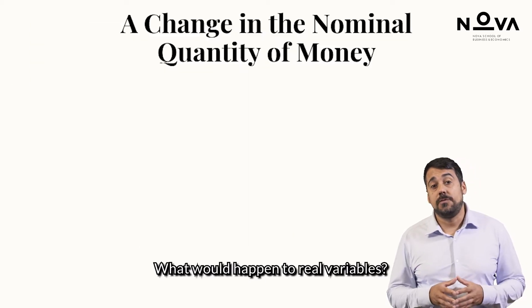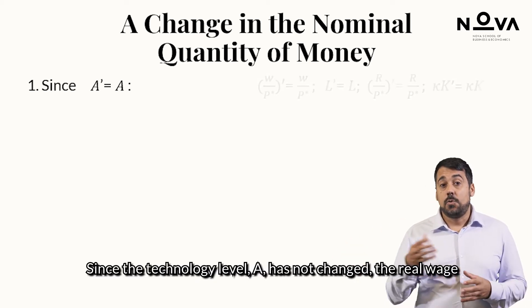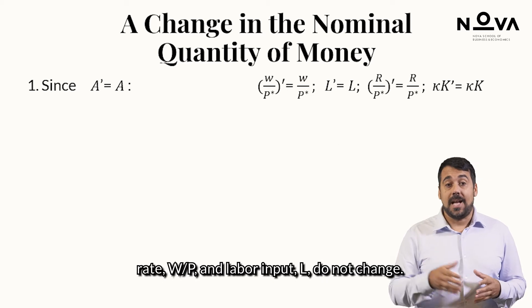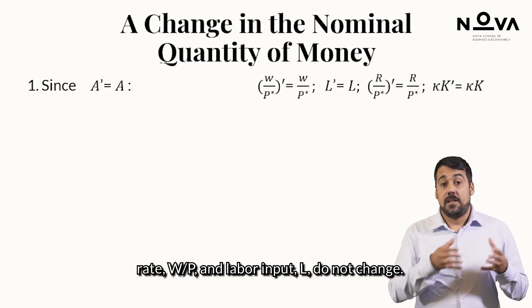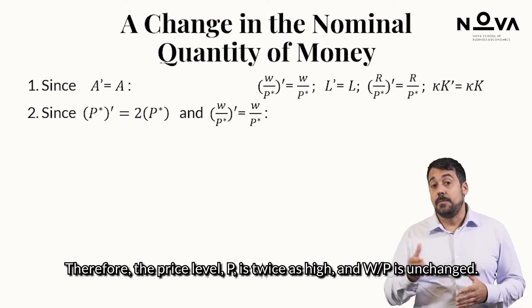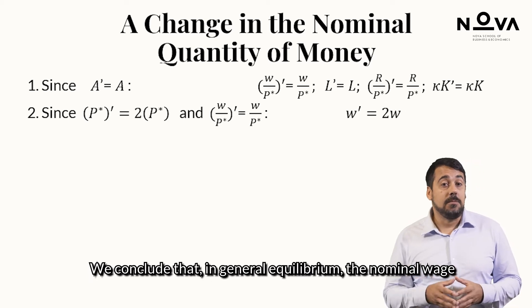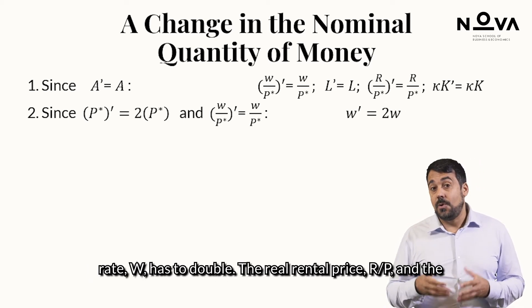What would happen to real variables? Since the technology level A has not changed, the real wage rate W over P and labor input L do not change. Therefore, the price level P is twice as high, and W over P is unchanged. We conclude that in general equilibrium, the nominal wage rate W has to double.